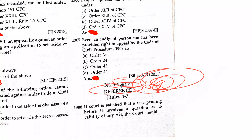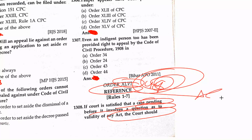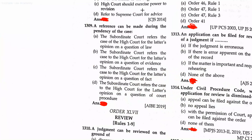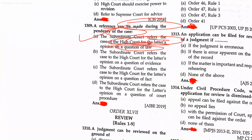If the court is satisfied that the case pending before it involves a question of validity, the court should refer the matter to the High Court. A reference to the High Court can be made during the pendency of the case. The subordinate court refers the case to the High Court for its opinion on the question of law.